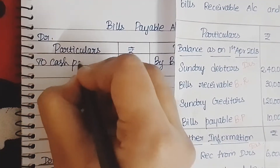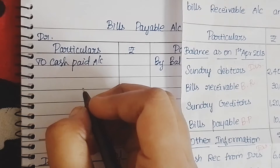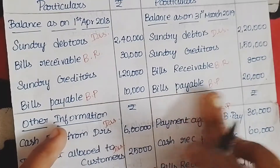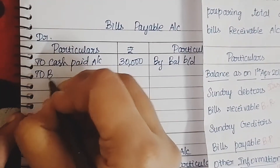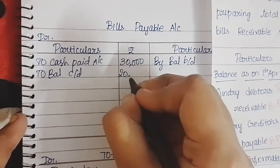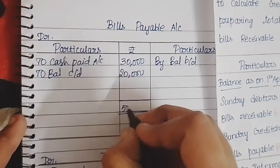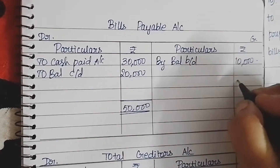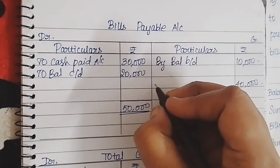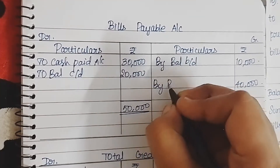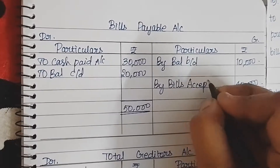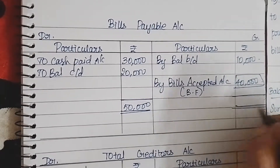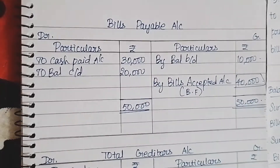Next, closing bills payable — 20,000. To balance carry down — 20,000. So: 50,000 minus 10,000 is 40,000. The balancing figure is bills payable accepted. By bills accepted account — 40,000. Tally. Easy — bills payable done.